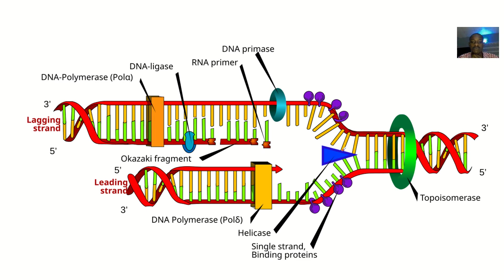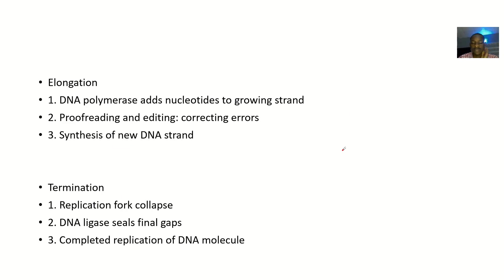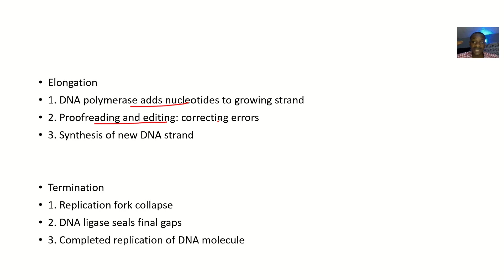Moving to elongation. DNA polymerase will add nucleotides to the growing strands. There's also proofreading and editing — it will be correcting errors. It's when errors are not corrected that you have genetically inherited diseases. So it will be proofreading and editing, making sure the DNA is fine, and then there will be synthesis of a new DNA strand.